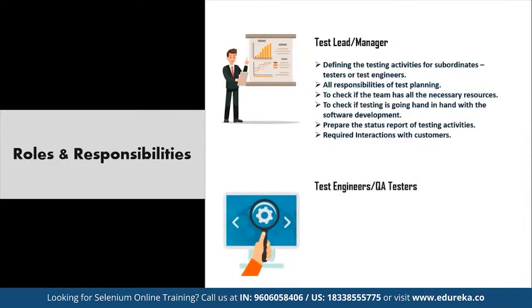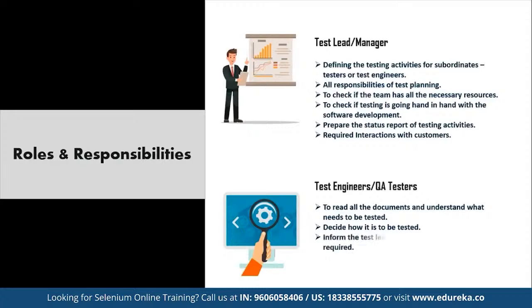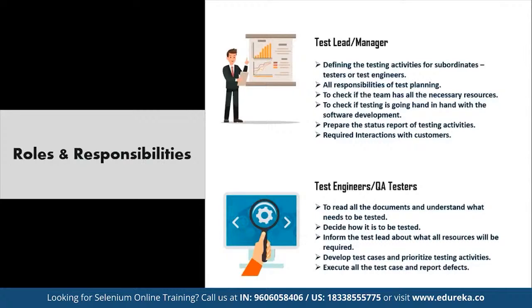The second level is the test engineers or QA testers. They are responsible for reading all documents and understanding what needs to be tested, deciding how it is to be tested, informing the test lead about required resources, developing test cases, prioritizing testing activities, executing all test cases, reporting defects, defining severity and priority for each defect, and carrying out regression testing every time changes are made to the code to fix defects.